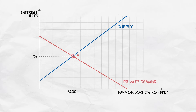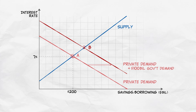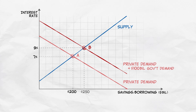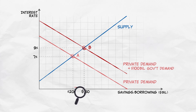We'll use some numbers here for illustration. Imagine the government decides to borrow $100 billion to build that new road. This shifts the demand for loanable funds up and to the right, increasing the equilibrium interest rate from 7% to 9%. A higher interest rate means that the quantity of savings supplied will increase, in this case from $200 to $250 billion.